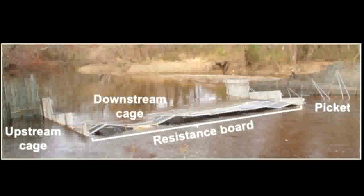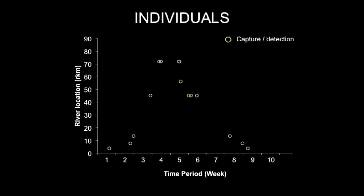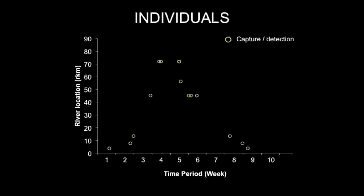We captured and PIT-tagged individuals at a weir near the river mouth and released them upstream of the weir. We passively monitored tagged fish with an upstream array of PIT antennas. Individual activity centers depended on detections at the weir and antennas, the previous estimated location, and river conditions. We used gauge height as a covariate.